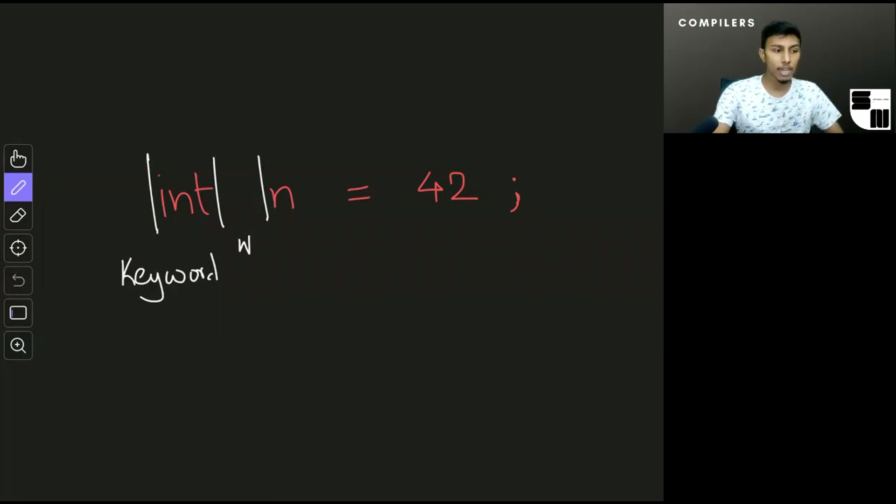Then it takes this and says this is an identifier. Let me write an I here. Variable names are identifiers, so it says that n is the identifier here.